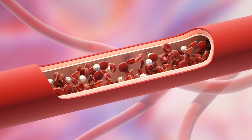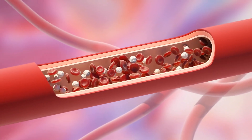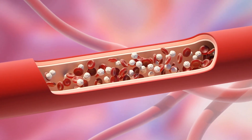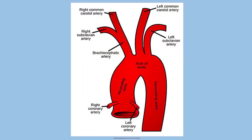The ostia of the coronary arteries originate from the sinuses of Valsalva at the root of the aorta, as shown in this diagram. There are variations that occur in a very small percentage of patients, and I will not dwell on these variations. The left main coronary artery originates from the left sinus of Valsalva.